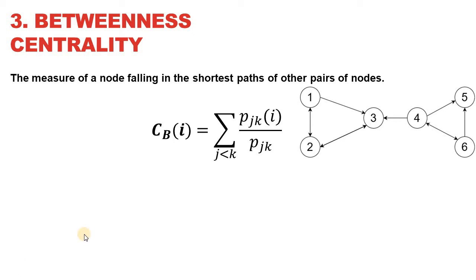Next we are going to calculate betweenness centrality for any given node, which identifies how important a node is. The betweenness centrality of any node i can be calculated as the sum of shortest paths having i in them, divided by the total number of shortest paths from all nodes to all other nodes. The condition is that the two nodes used for calculating the shortest path are not the same node. It can be used for both directed and undirected graphs, where in the case of directed graphs we only consider shortest paths using directionality.